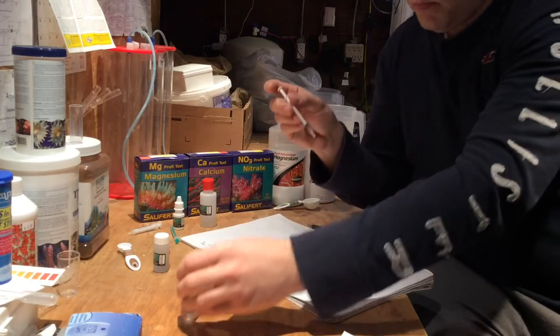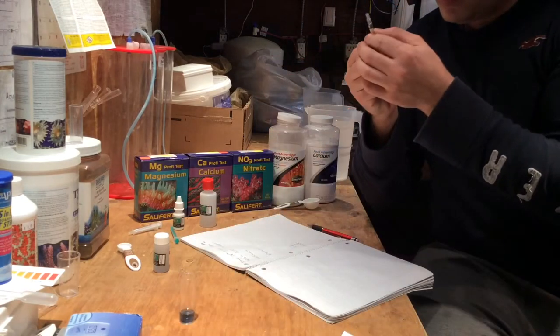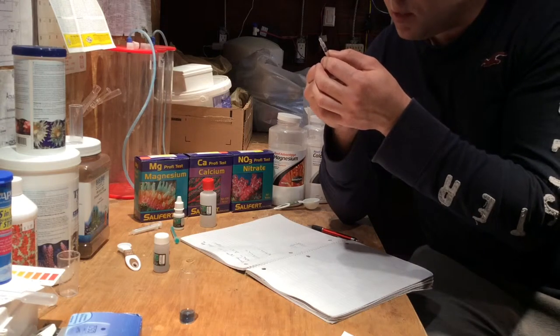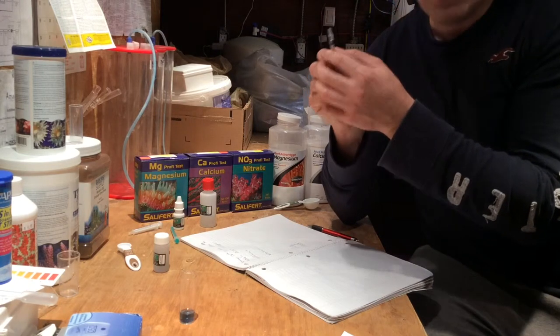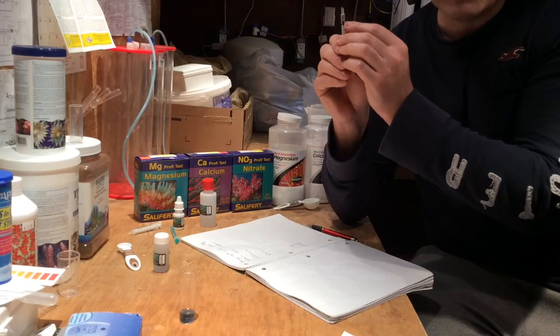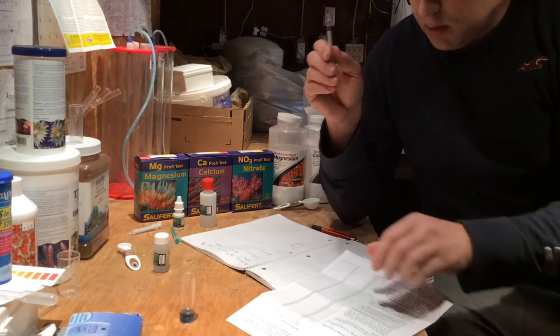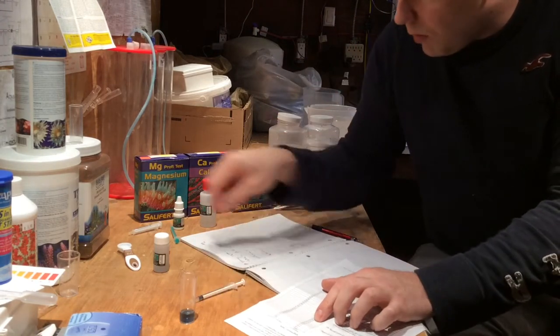So now we're going to take our reading. So we look on our vial and it's 0.15 on the syringe. Then we look at our chart that came with it.